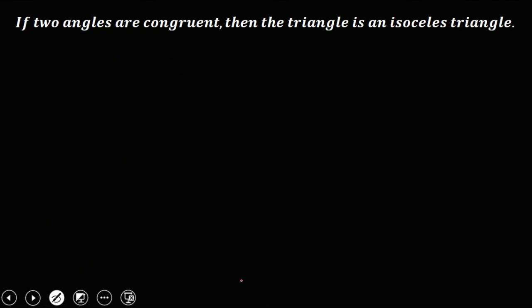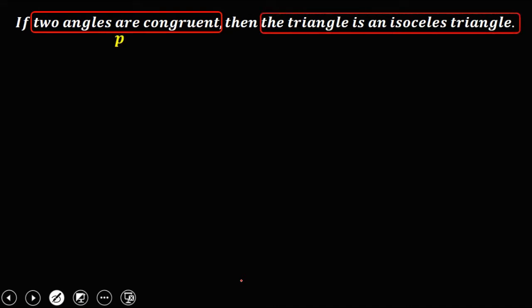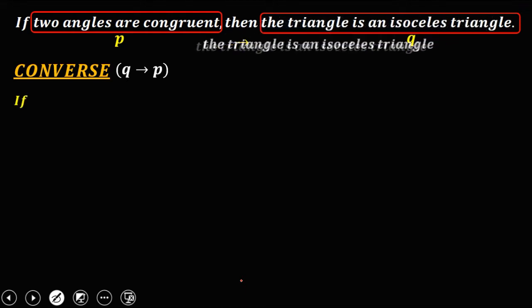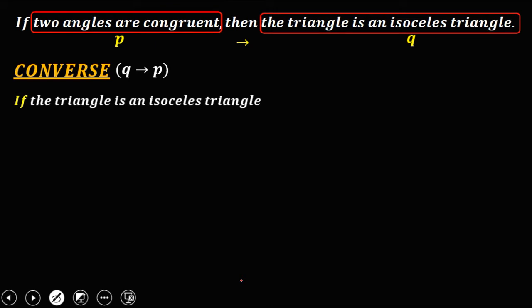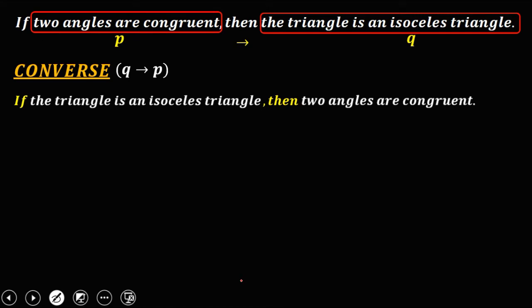We have this conditional statement: if two angles are congruent, then the triangle is an isosceles triangle. So P is 'two angles are congruent,' and Q is 'the triangle is an isosceles triangle' — that's P implies Q. To get the converse, Q implies P: if the triangle is an isosceles triangle, then two angles are congruent. So this is the converse.